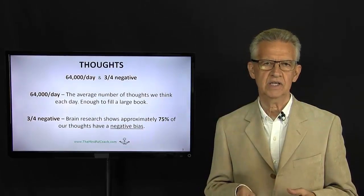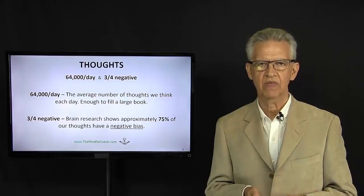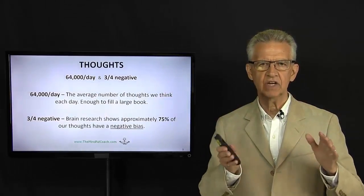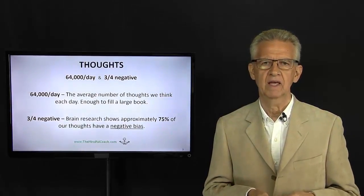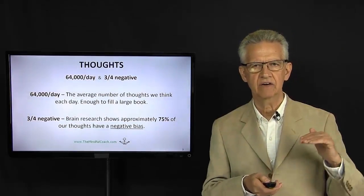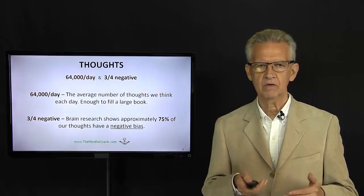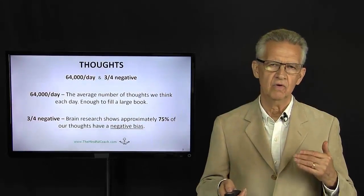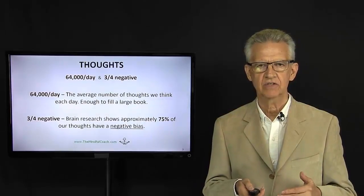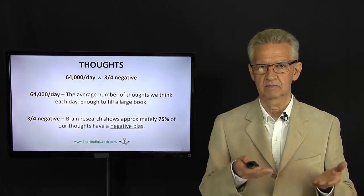New studies on the brain estimate that we think something like 64,000 thoughts per day, and that's enough to fill a large book. The other part of it is that about three quarters of those are negative. They have a negative bias.